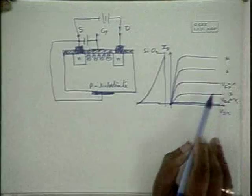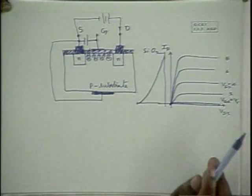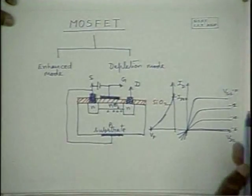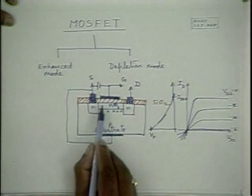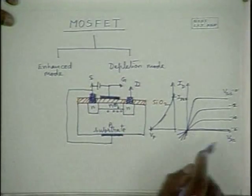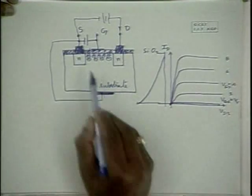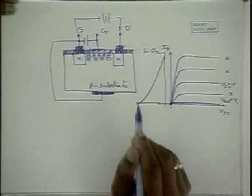What is the difference between an enhanced mode FET and a depletion mode FET? The enhanced mode FET works for positive gate to source potentials, and the depletion mode FET works for negative gate to source potential. This is because of the construction difference — similar construction to JFET in the depletion case, and different construction in the enhancement case.